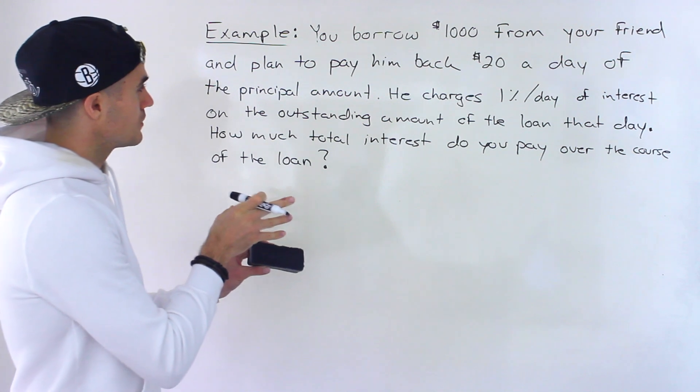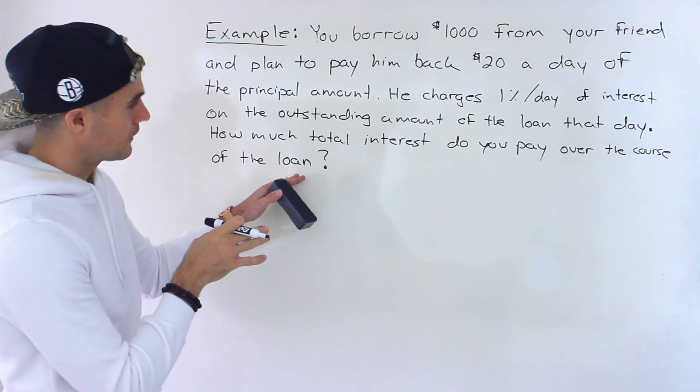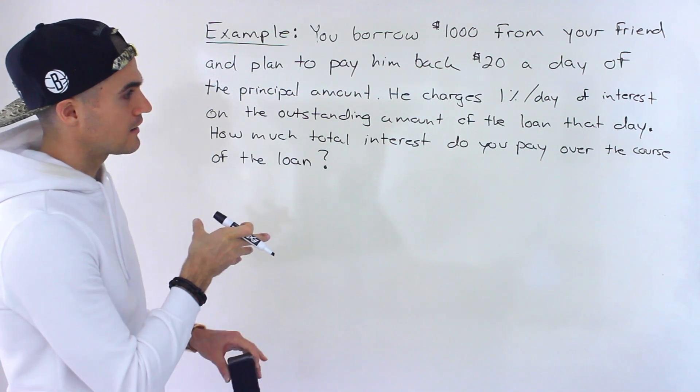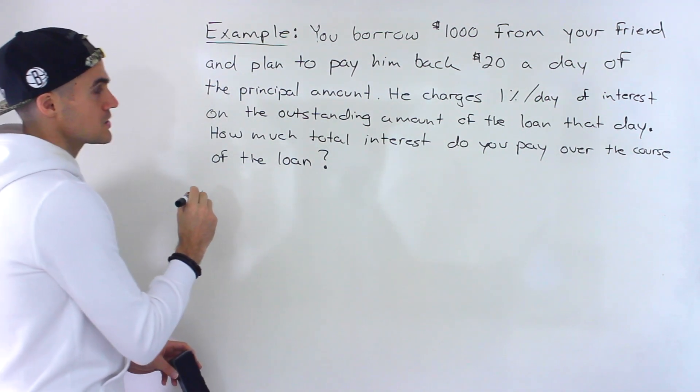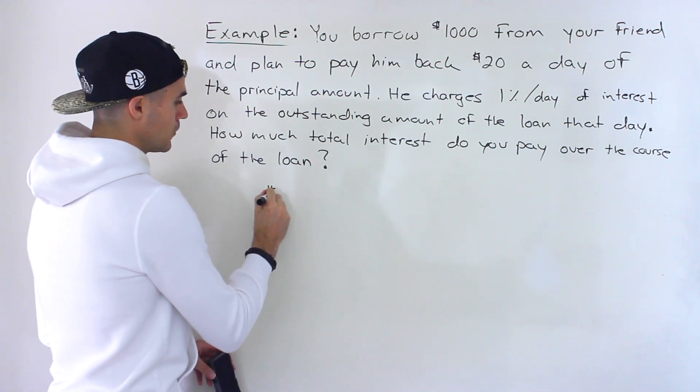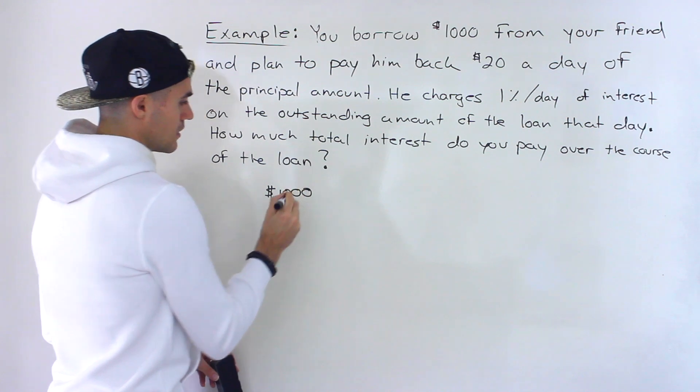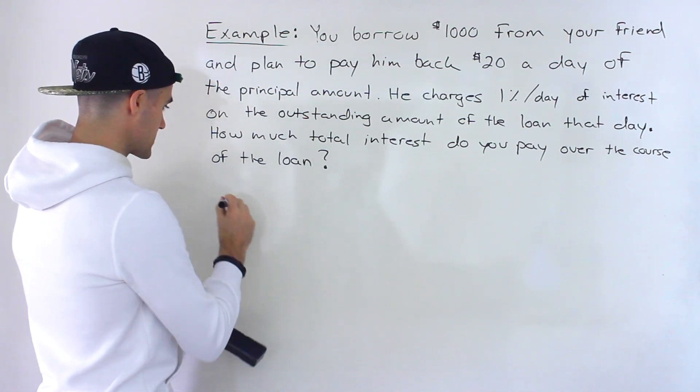So this one, the wording can be a little bit tricky, but once you figure out what you're doing, then it's going to be fairly easy. You just have to plug stuff into a formula. So let's break this down. So what's happening is you're borrowing $1,000 from your friend. Let's actually make some rows here.